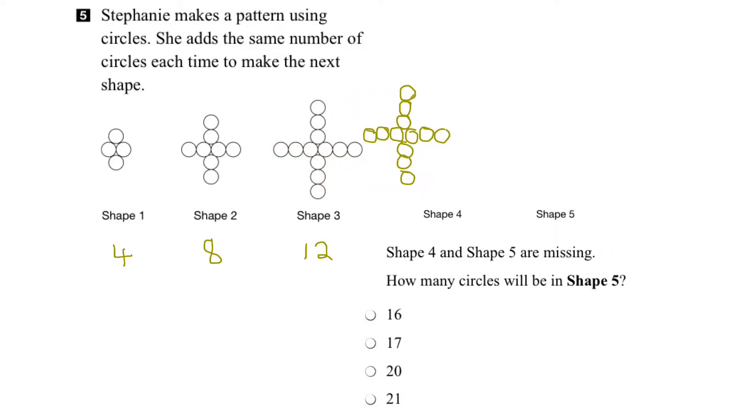So shape 4, this shape 3 would form the foundation for shape 4. And then we need to add a circle at the top, at the bottom, on the left, and on the right. So we've added 4 more circles. One here, here, here, and here, which would give us a total of 16 circles in shape 4.